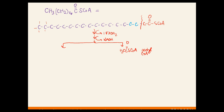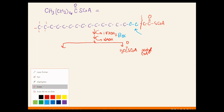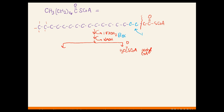As part of beta-oxidation, plain old CoA comes in and attaches to the remaining fatty acid chain — that's the last step of beta-oxidation.